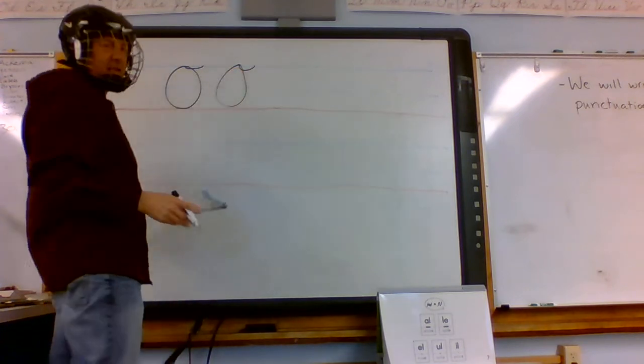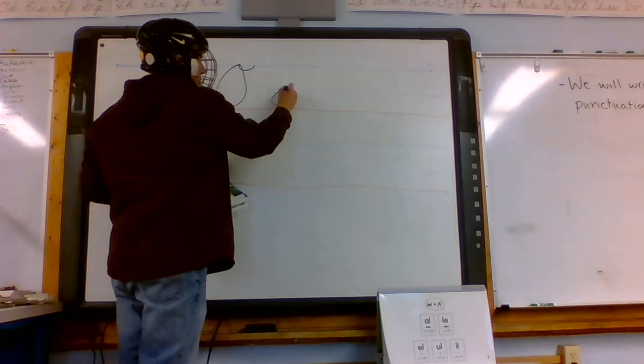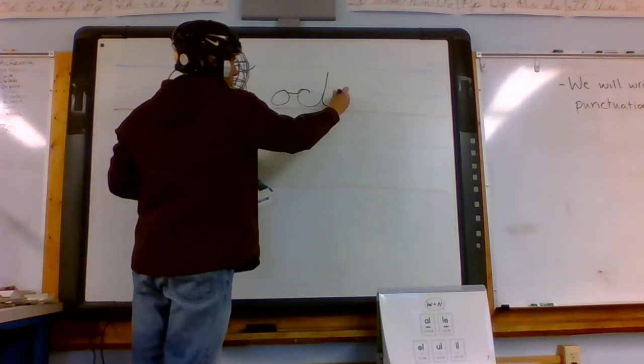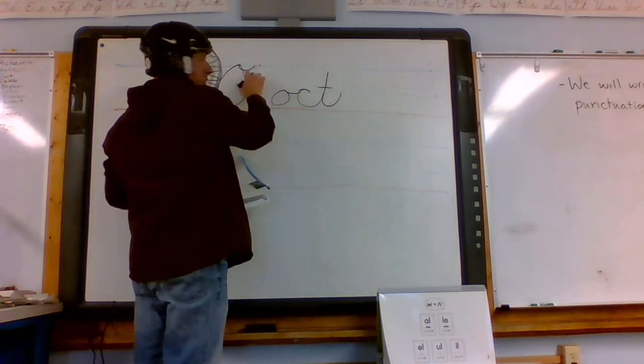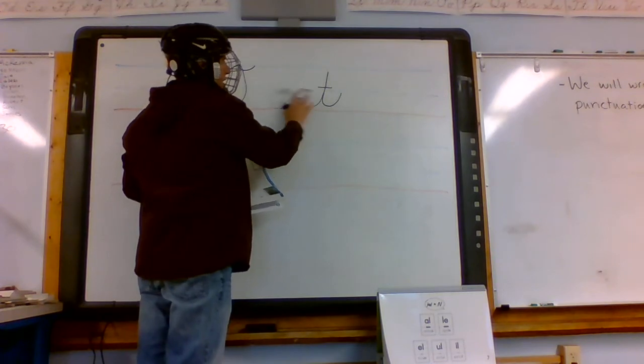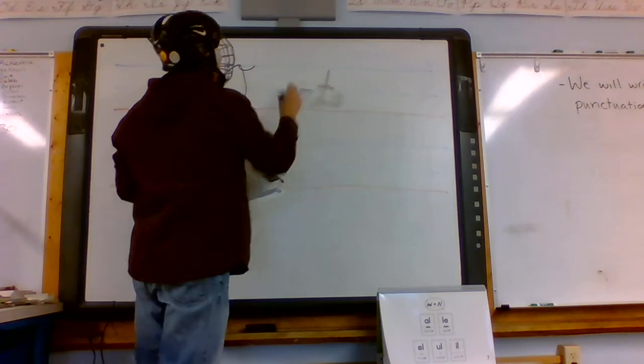Now this check stroke doesn't connect into other letters like the lowercase O, right? The lowercase O goes like this. If I do octopus, O-C-T-O, right, how it connects, OCT. But the capital O does not. Okay, that check stroke is up there but it's just up there to look good.